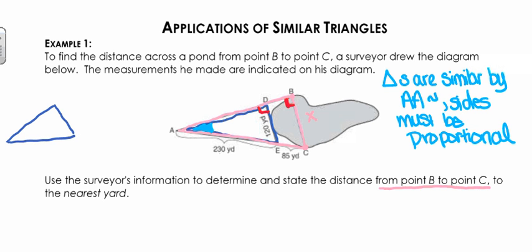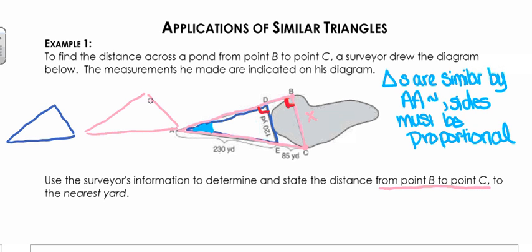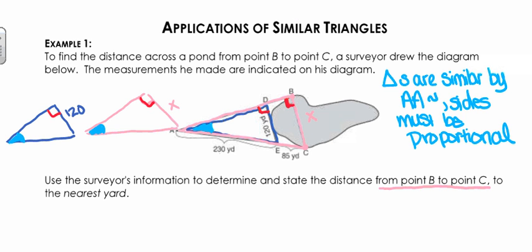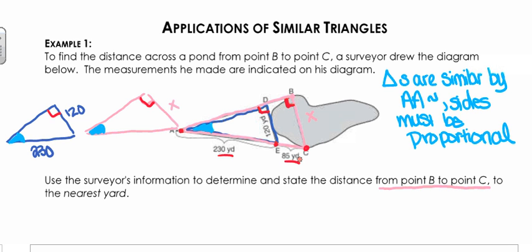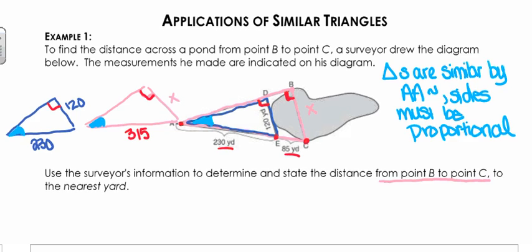There's my blue one and there's my pink one. Each of these has right angles up at the top and congruent angles in the bottom left-hand corner — two congruent angles means triangles are similar. The right side of the blue triangle is 120 yards. The right side of the pink triangle is X, what we're trying to find. The bottom of the blue triangle is 230 yards. The bottom of the pink triangle is made up of two pieces: 230 yards and 85 yards, making it 315 yards total.